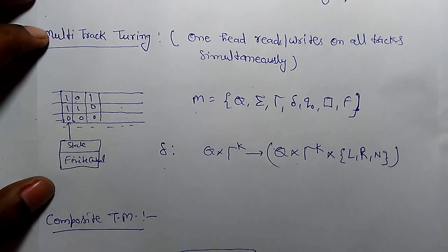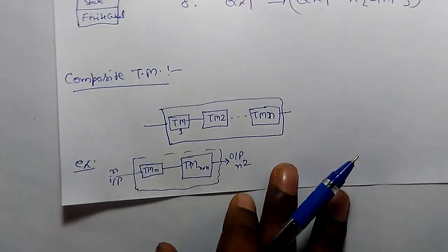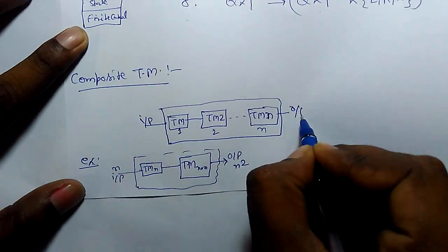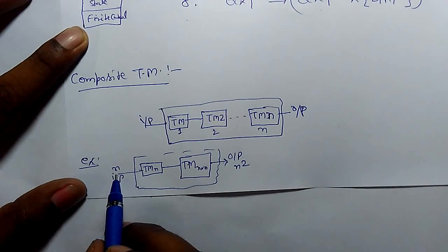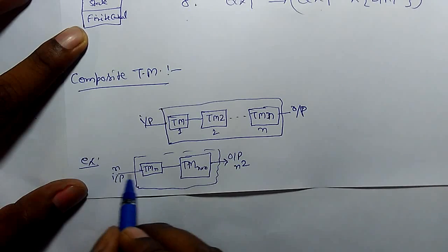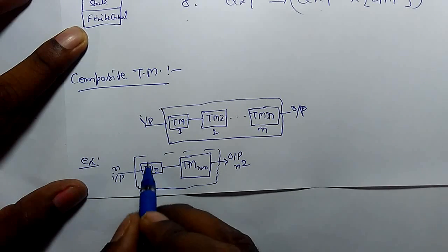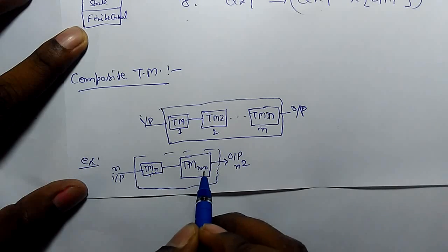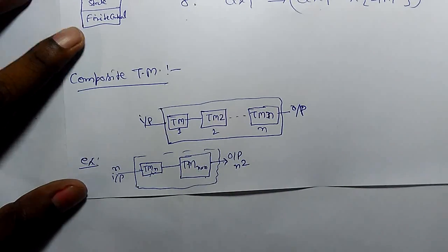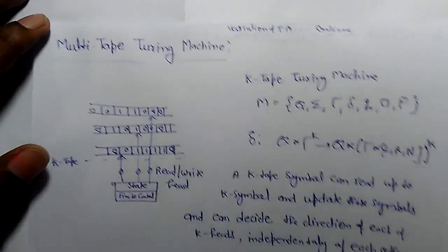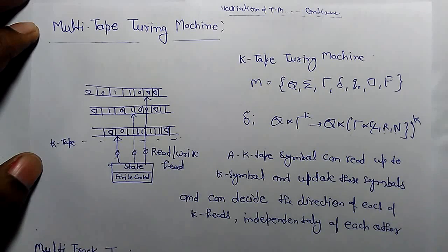There is another variant called the composite Turing machine, where you combine n number of Turing machines to get the output for a particular input. For example, to calculate n-squared: one Turing machine reads the input n, computes n cross n, and the output is n-squared. These are Turing machines equivalent to standard Turing machines — given the same algorithm, they produce the same output on the same input. Thank you.